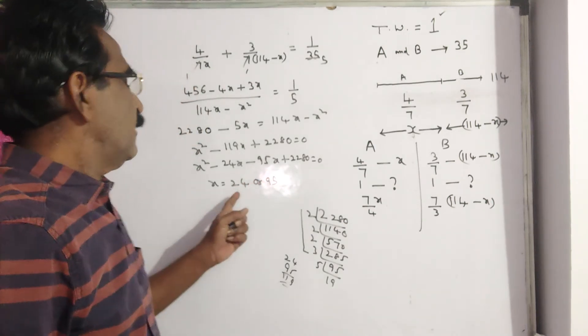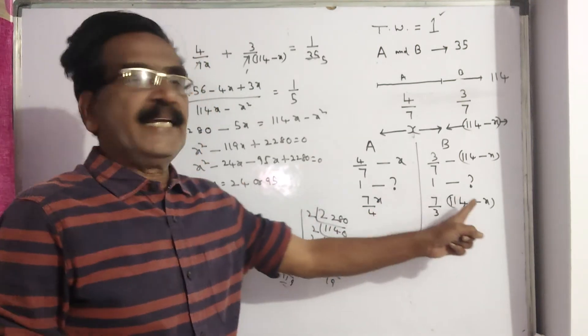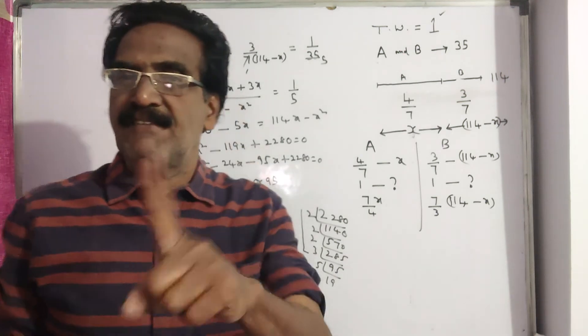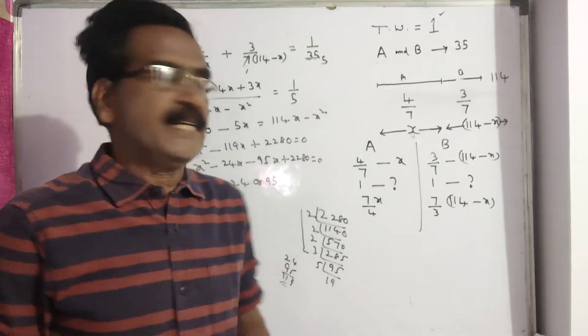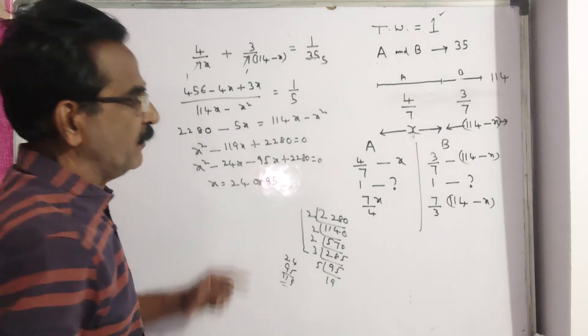If you take x is equal to 95, then B becomes more efficient, but given that A is more efficient, so we have to take x is equal to 24.